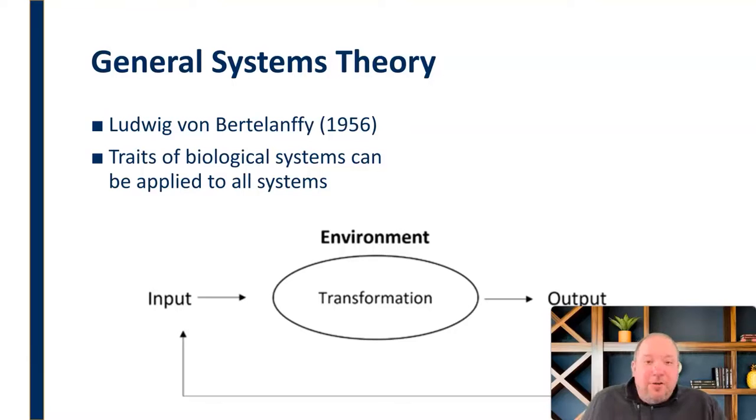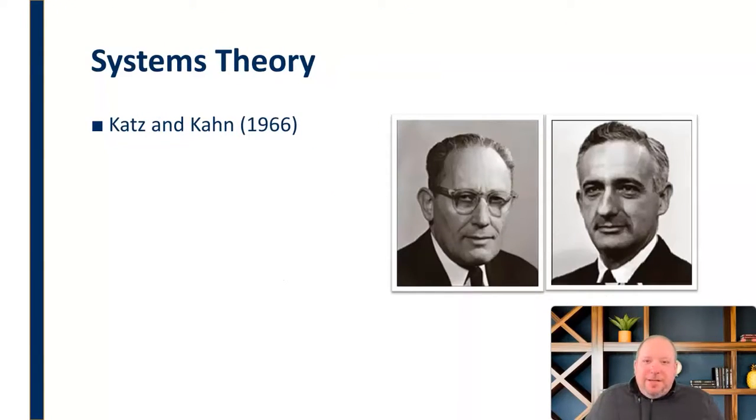In 1956, the idea of general systems theory started. Then in 1966, 10 years later, general systems theory was expanded to the study of organizations by Daniel Katz and Robert Kahn, who called the approach systems theory.